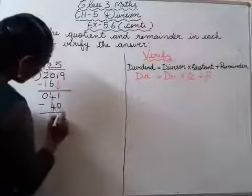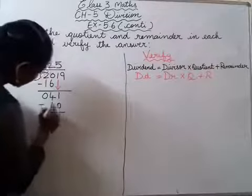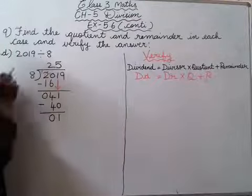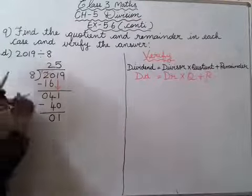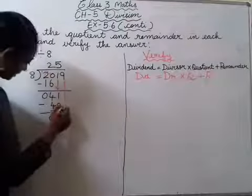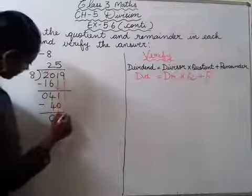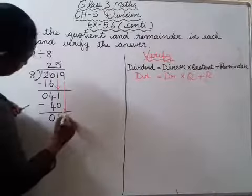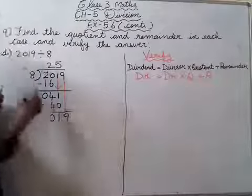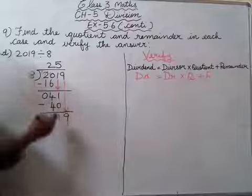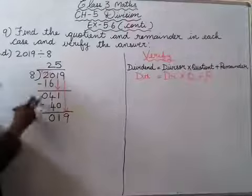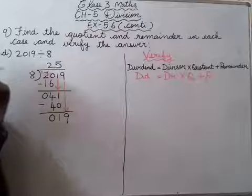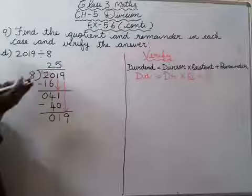Minus. 1 minus 0 will be 1, 4 minus 4 will be 0. So what is the next step? You have to bring this 9. 9 ko neeche leke aana hai. Ek ek number karke neeche leke aana hai. So 19. 19 — 8 table mein aayega nahi aayega — usse kam number to aayega.